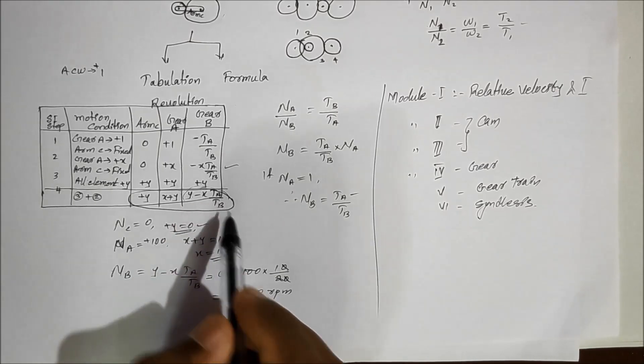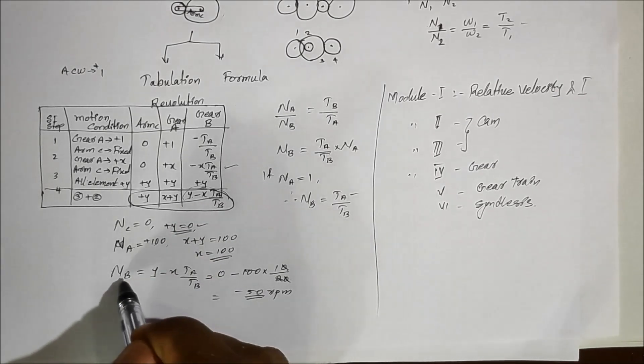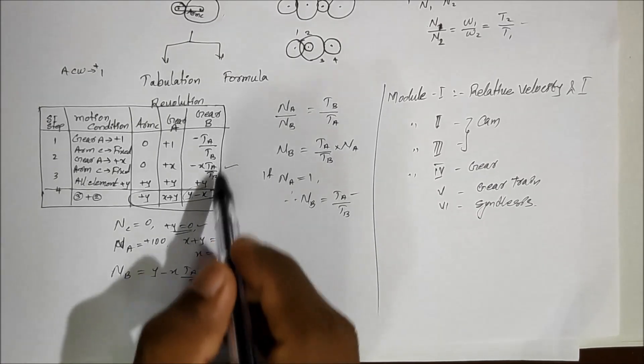The value of TA by TB is already given. Substitute it into the expression. NB equals Y minus X times TA by TB.